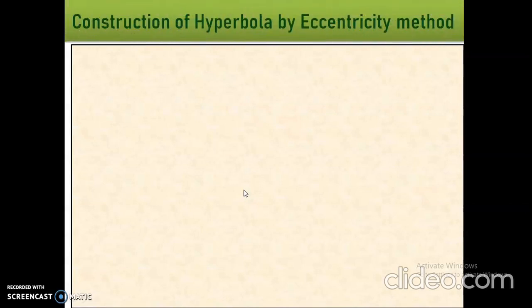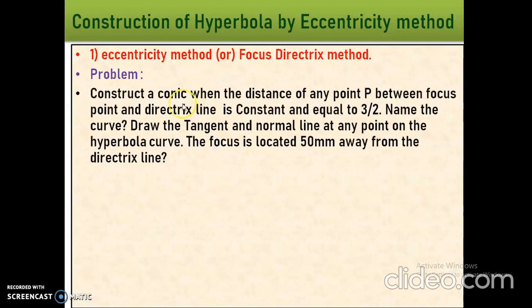Let us see the problem. Construct a conic when the distance of any point P between the focus point and directrix line is constant and is equal to 3 by 2. Name the curve. Also draw the tangent and normal line at any point on the hyperbola curve. The focus is located 50 mm away from the directrix line.